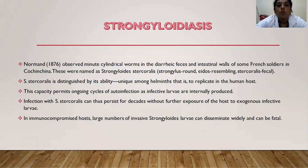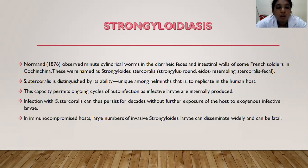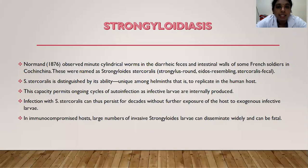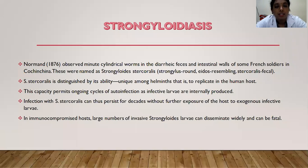Coming to Strongyloidiasis: Normand in 1876 observed minute cylindrical worms in the diarrheic faeces and intestinal walls of some French soldiers in Cochin China. These were named Strongyloides stercoralis — strongyloides means round, eidos means resembling, stercoralis means faecal. Strongyloides stercoralis is distinguished by its unique ability among helminths to replicate in the human host. This permits ongoing cycles of auto-infection as infective larvae are internally produced, allowing infection to persist for decades without further exposure. In immunocompromised hosts, large numbers of invasive strongyloid larvae can disseminate widely and this can be fatal.